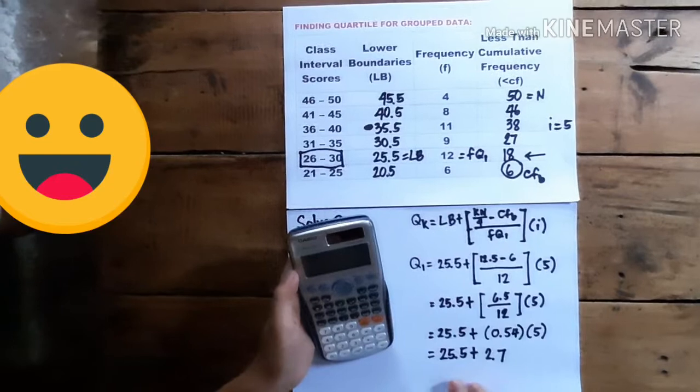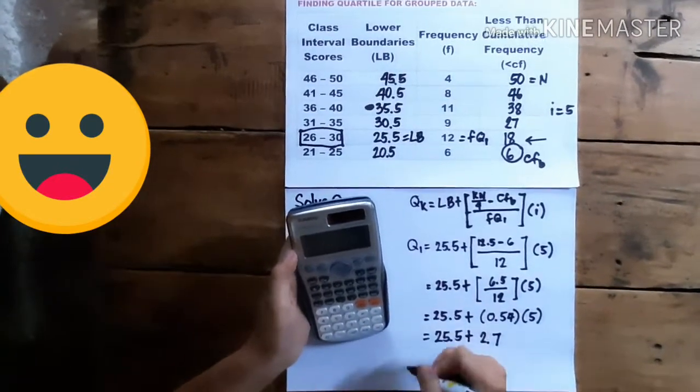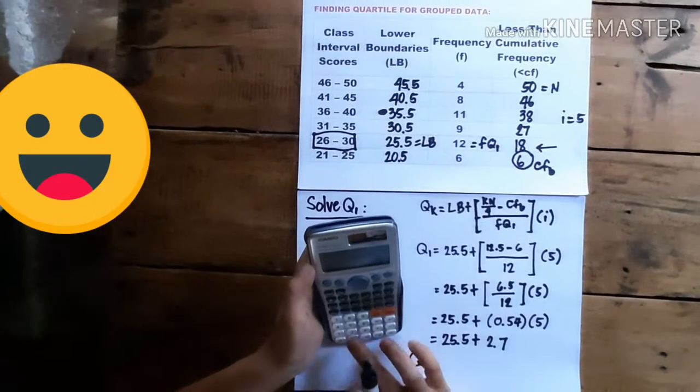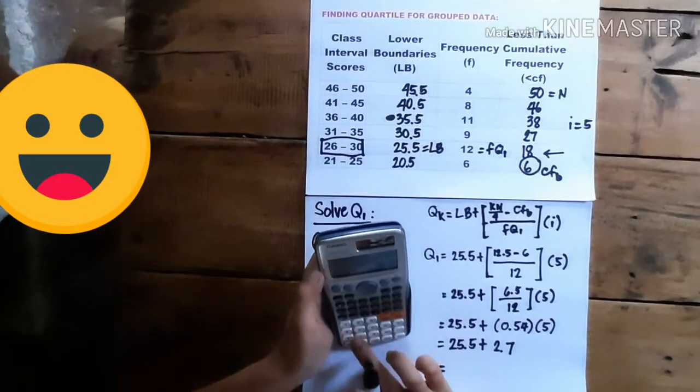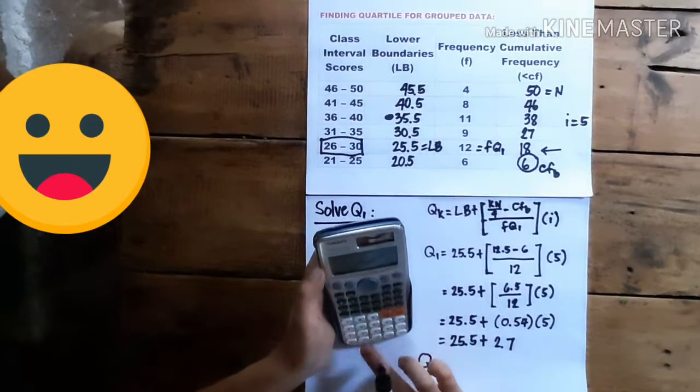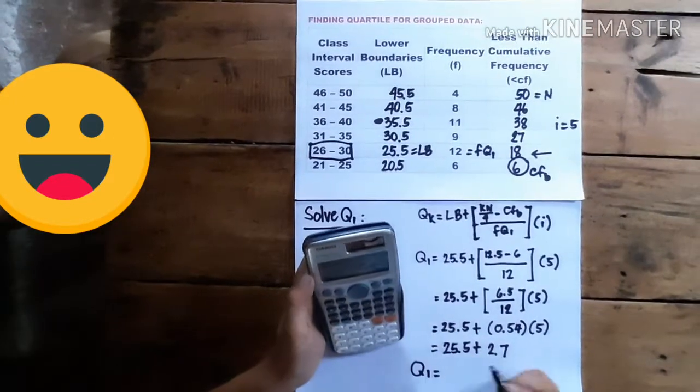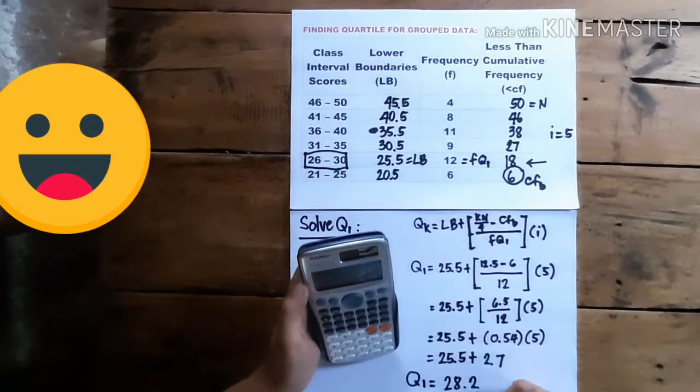And that means, 25.5, we add 2.7. And this is our quartile 1. So 25.5 plus 2.7. Oops, 2.7. And our quartile 1 is 28.2.